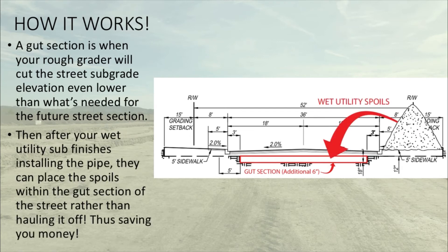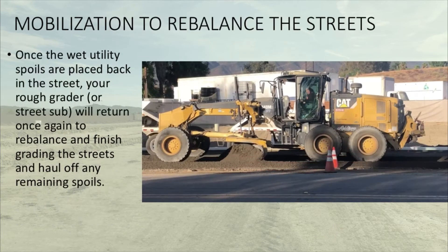Then after your wet utility sub finishes installing the pipe, they can place the spoils within the gut section of the street rather than hauling it off, thus saving you money. And once the wet utility spoils are placed back in the street, your rough grader or your street sub will return once again to rebalance and finish grading the streets and haul off any remaining spoils beyond that.